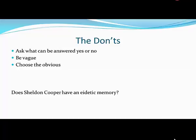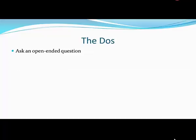So let's take a look at the do's. Do ask an open-ended question. Words like 'how' and 'what' are the types of words that are going to bring in multiple answers. Do have a defined scope — you can't write about the whole history of something or the entire idea of something. Remember, you have to narrow it down to what can be managed in a short research essay.